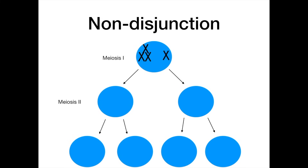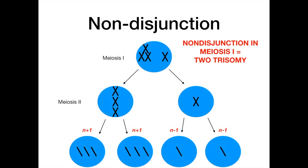When the cell splits into two, you have three chromosomes in one and one chromosome in the other. Then the chromosomes align across the meiotic spindle in meiosis 2 and repeat the process in anaphase. The result is labeled N+1, N+1, N-1, and N-1. If non-disjunction occurs in meiosis 1, you get two cells that are trisomy — two cells have N+1 when they should just have N. So non-disjunction in meiosis 1 gives two trisomy cells and two N-1 cells.